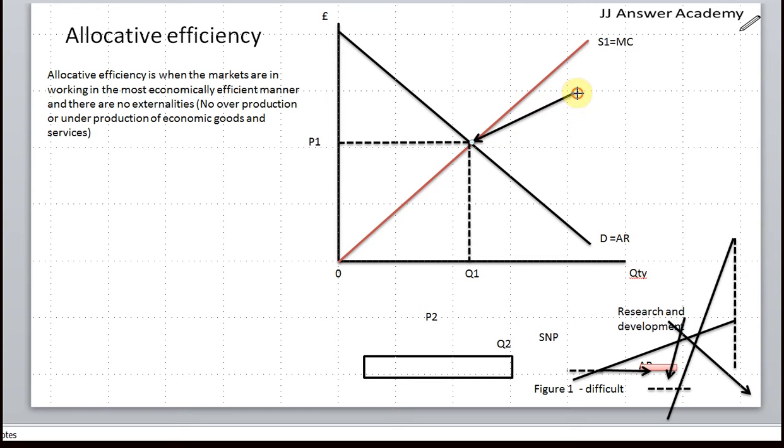And at this point, price equals marginal cost. Markets are allocatively efficient where price is equal to MC.